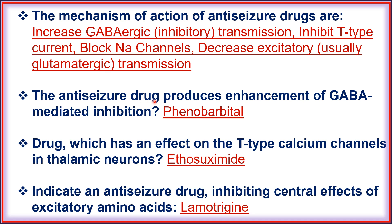The anti-seizure drug that produces enhancement of GABA-mediated inhibition is phenobarbital. The drug which has an effect on T-type calcium channels in thalamic neurons is ethosuximide.